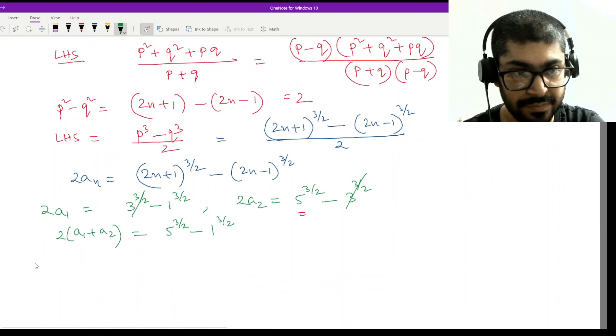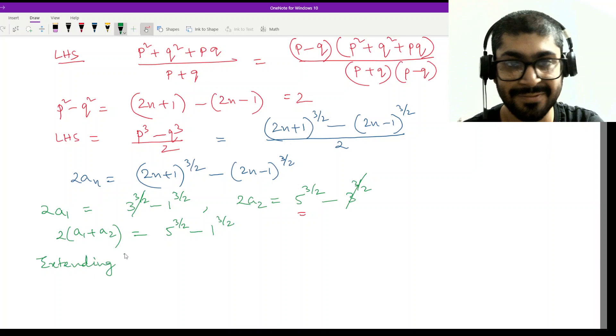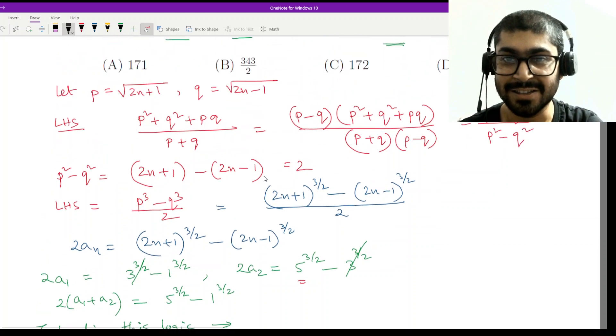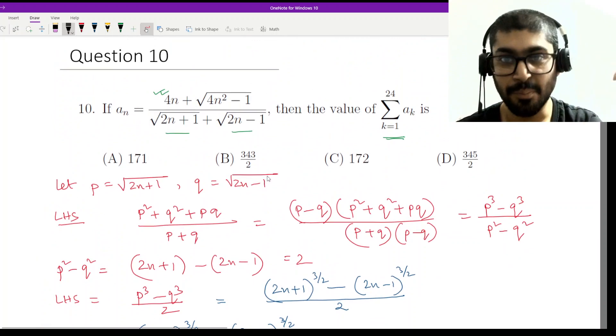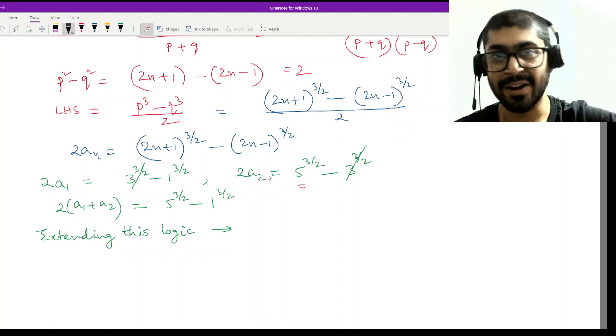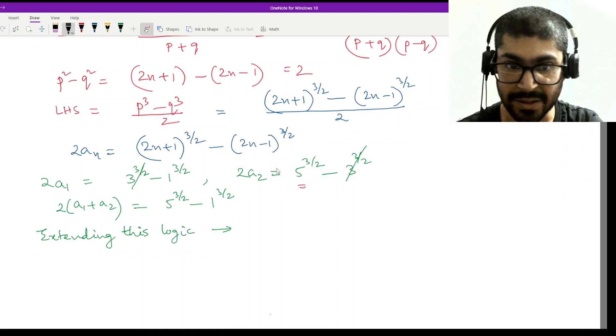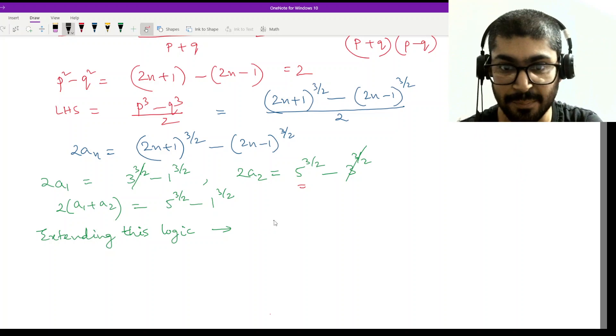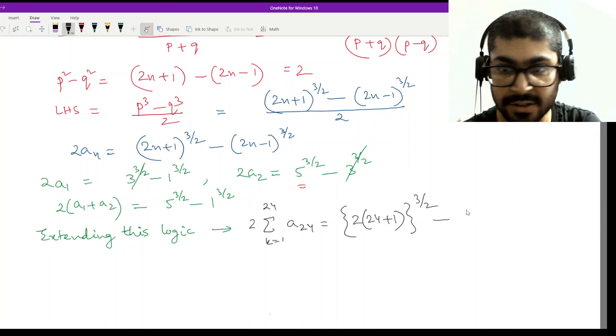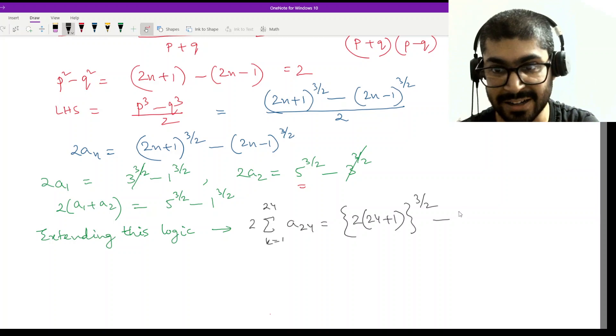So if I were to extend this, I am writing it like this because this is not going to be evaluated by the NCERT or some boards that are expecting subjective answers. I am doing it so that you know how to think, so do not worry or feel insecure about writing these type of statements in the rough space. No one is going to check the rough space. So this is what you will think: if you extend this logic, sum twice of k equal to 1 to 24, a_24, so this would be 2 into 24 plus 1 this thing to the power 3 by 2 minus that one will remain because whatever you do that one did not get cancelled, minus 1 to the power 3 by 2.